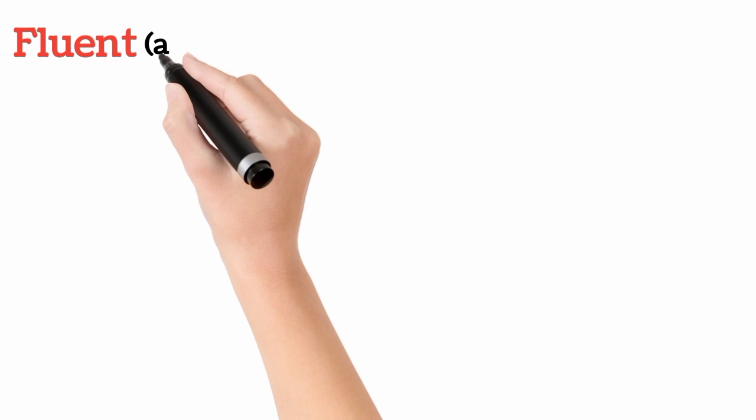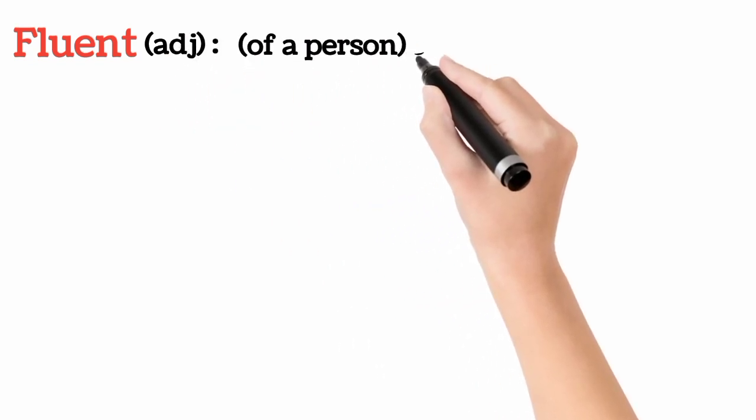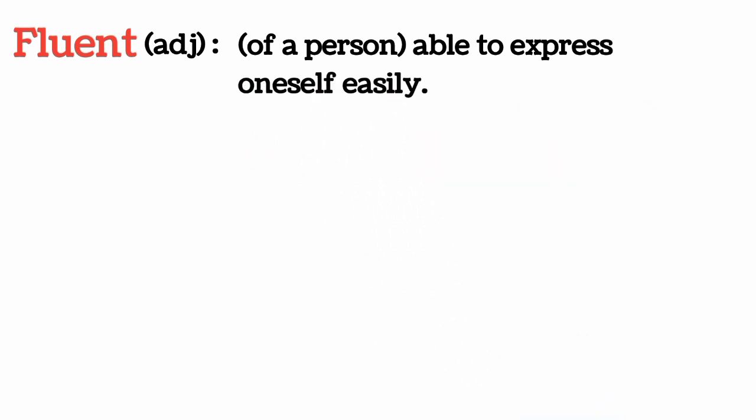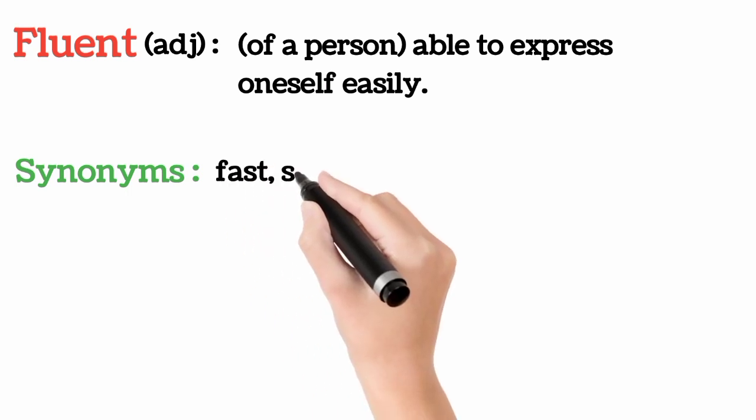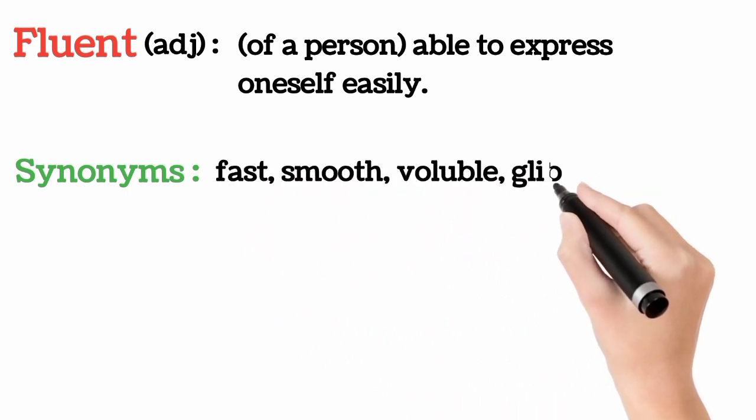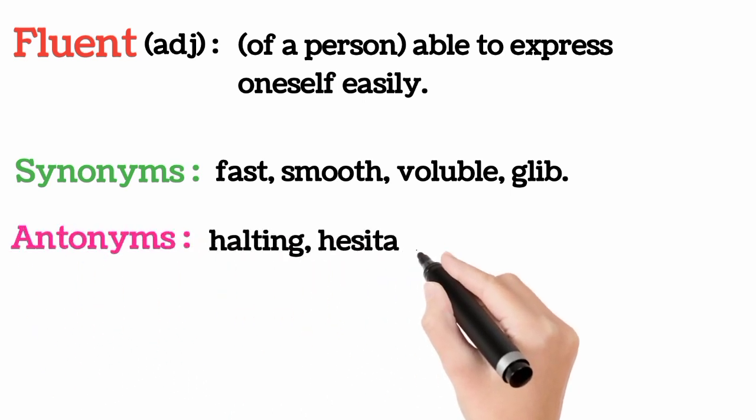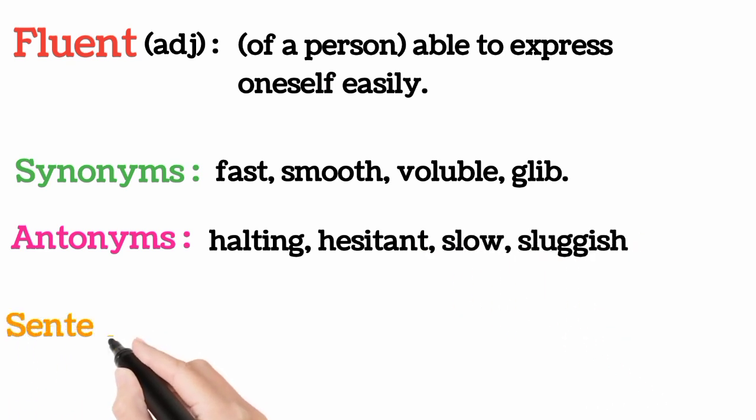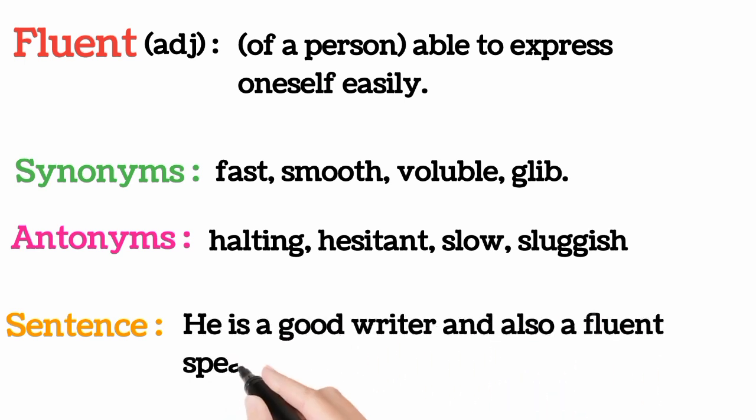Fluent, it's an adjective, which means of a person able to express oneself easily. Synonyms: fast, smooth, voluble, glib. Antonyms: halting, hesitant, slow, sluggish. He is a good writer and also a fluent speaker.